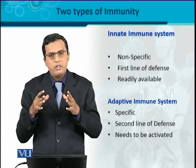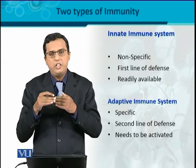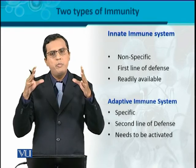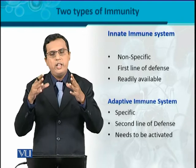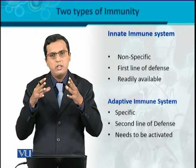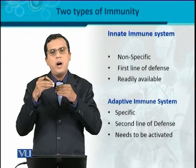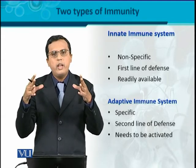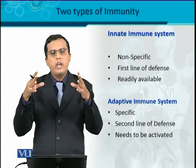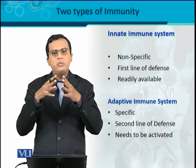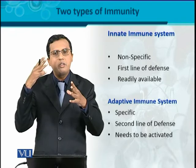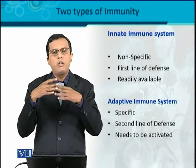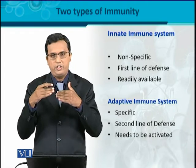The third important characteristic of the adaptive immune system is that it needs activation. In the innate immune system, it is readily available every time — all components are present at birth. But in contrast, the adaptive immune system needs to be activated. The body needs to activate all components of the adaptive immune system. When activated, certain molecules, cells, and secretory molecules are produced, which become available at the time of infection in order to combat and fight the infection.